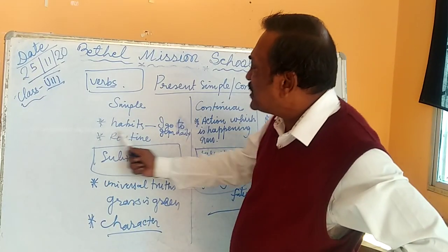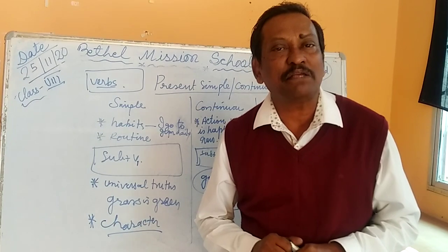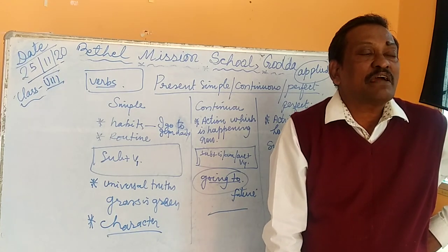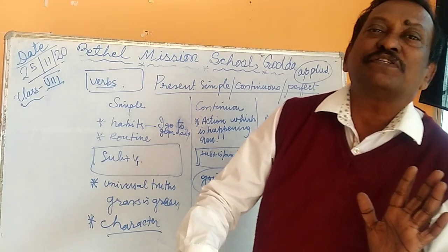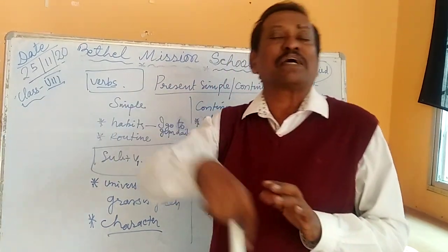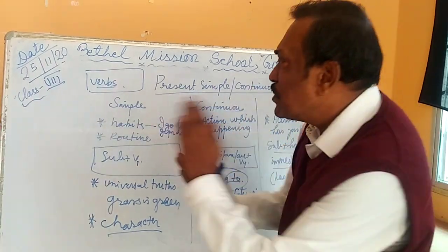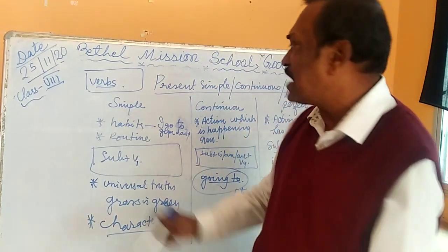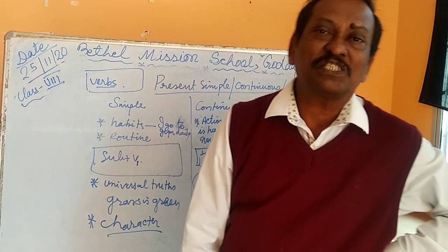A routine activity — we call this a habitual action. Any habitual action can be written in simple present. For example: I come to school at 7:30 every day — this is a habit, a habitual action. I have my breakfast at 9 a.m. every day. I go to bed at 10 o'clock at night. I like visiting places. All your habits, which you do on a daily basis at a specific time, are expressed in simple present.